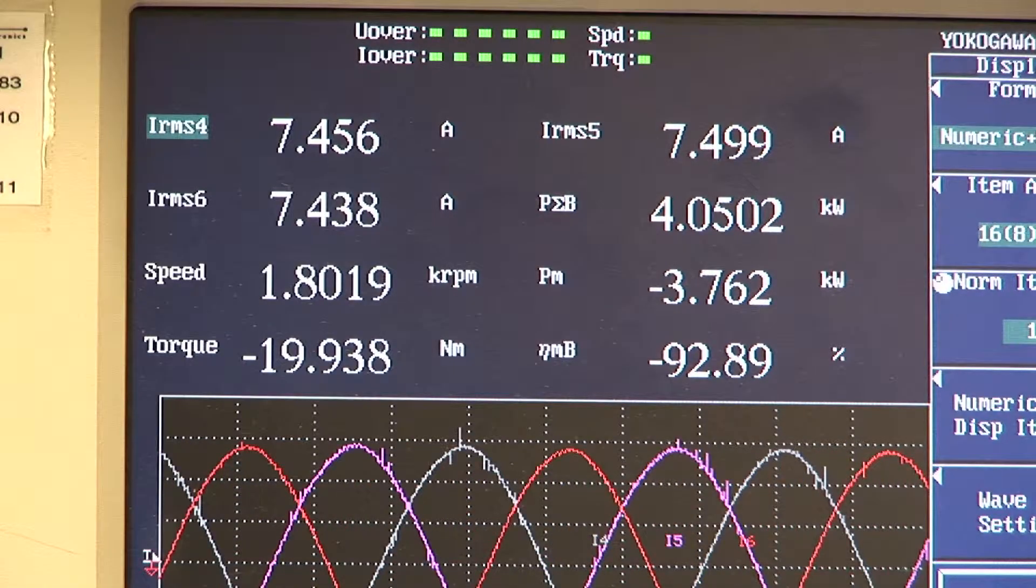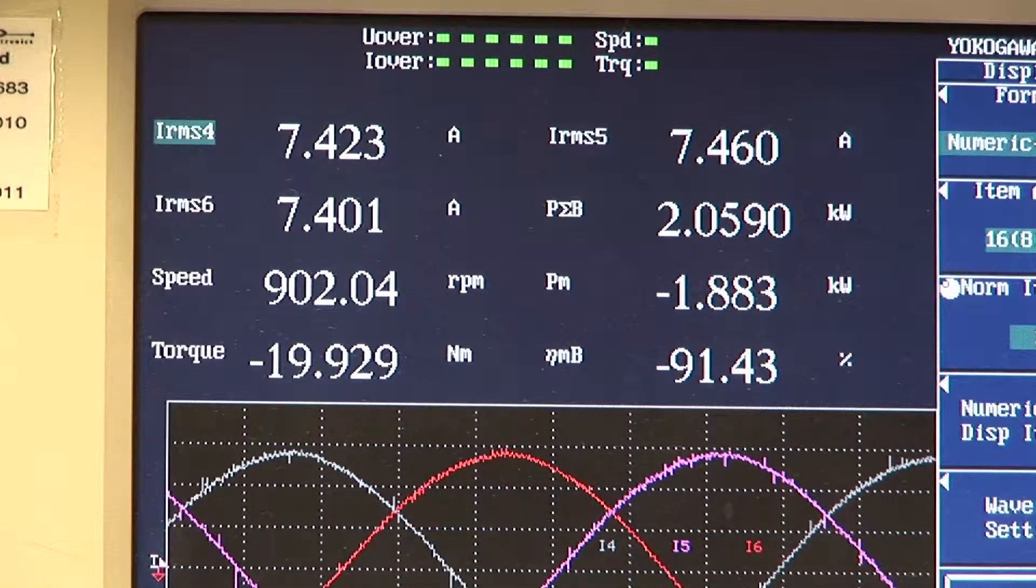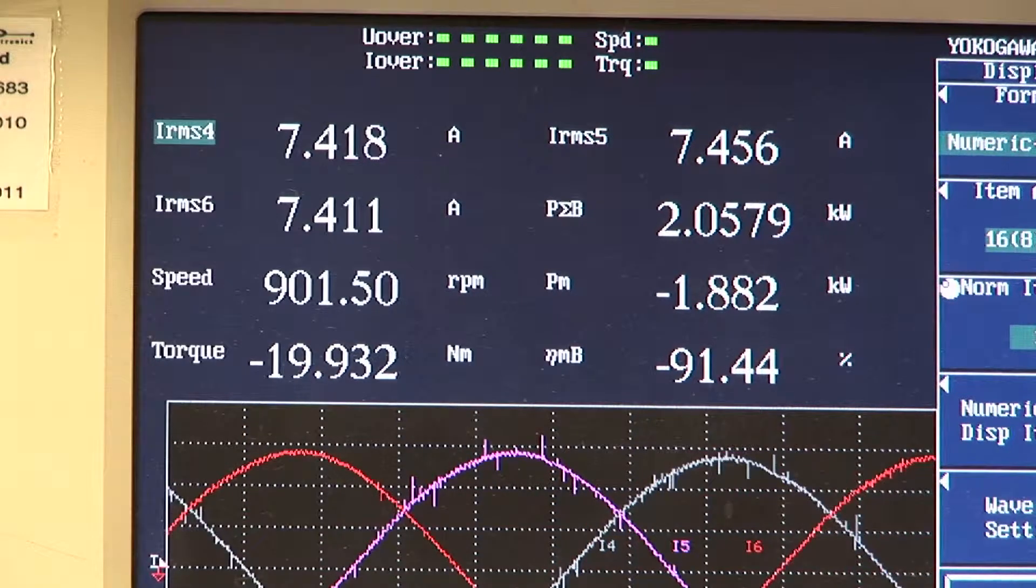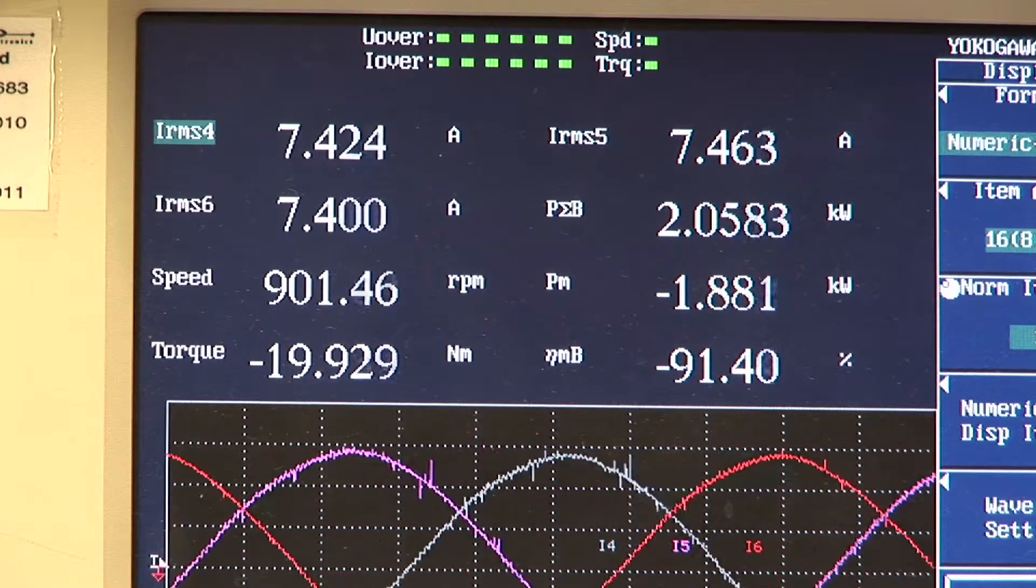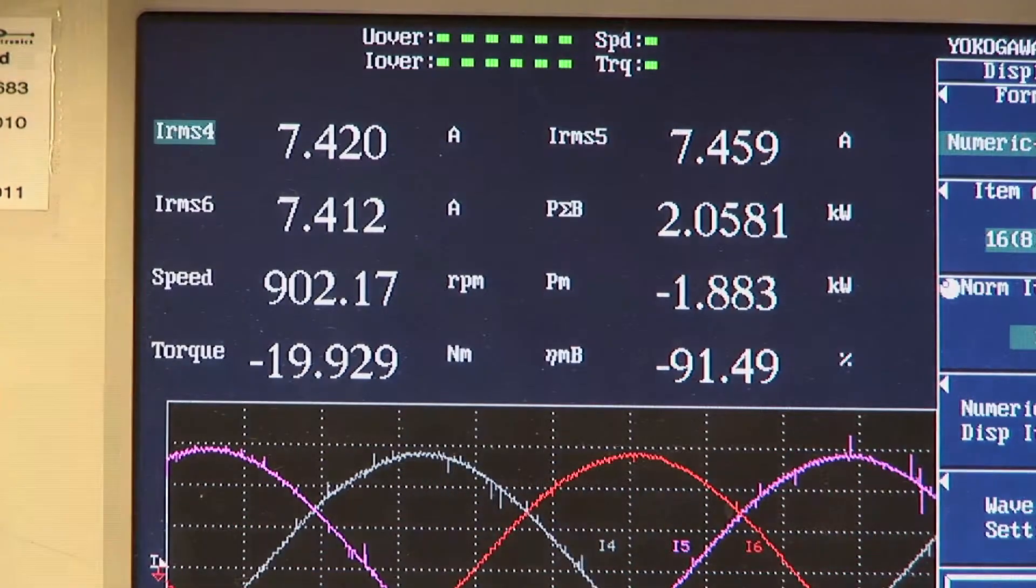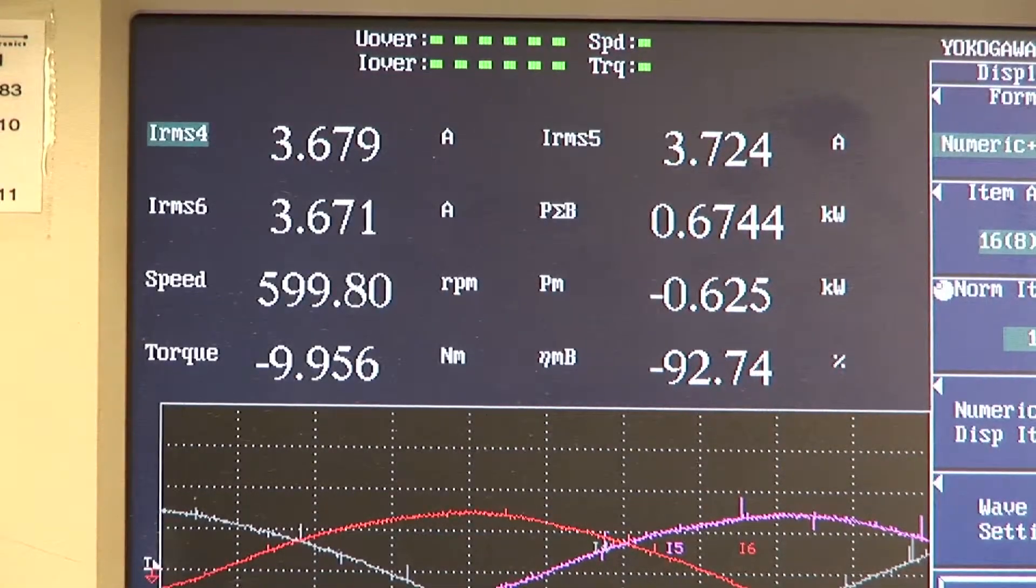We are now operating at half the rated speed, that is 900 rpm, and the torque is 20 Newton meters. We see that motor efficiency is over 91 percent. We will now operate at a reduced torque level at half the rated torque of the motor, that is 10 Newton meters.